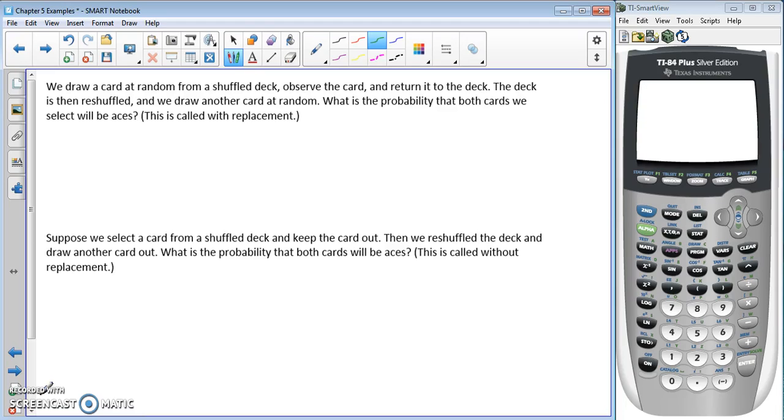Let's look at some examples with cards to understand some vocabulary. We draw a card at random from a shuffled deck, observe the card, and then return it to the deck. The deck is then reshuffled and we draw another card at random. What is the probability that both cards we select will be aces? This is called with replacement.